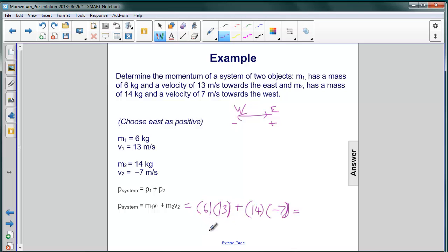So what we have is 6 times 13, which is 78, and 14 times negative 7, which is negative 98. So the answer is going to be negative 20 kilogram meters per second.